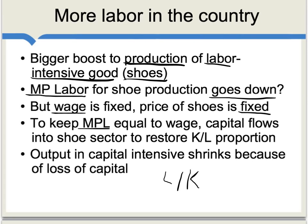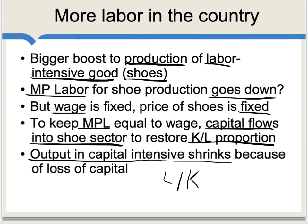So how can we get the marginal product of labor back up in the shoe sector? What we need is that capital flows into the shoe sector to restore a capital-to-labor proportion consistent with keeping the marginal product of labor constant and keeping the wage constant. Capital is flowing into shoe production in Guatemala and flowing out of computer production — or whatever else is the capital-intensive industry. Because the capital-intensive industry is losing capital, output in the capital-intensive industry shrinks, giving rise to the basic results of the theorem.